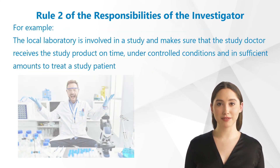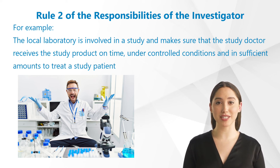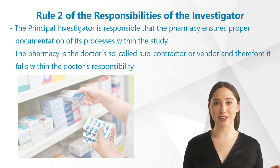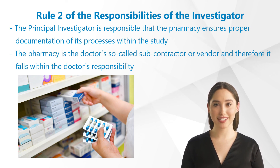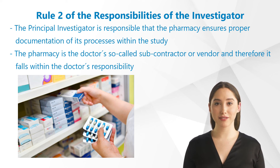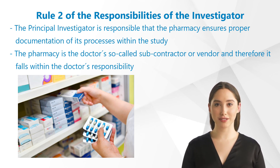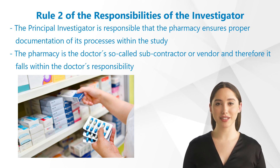For example, if the local pharmacy is involved in a study and ensures that the study doctor receives the study product on time, under controlled conditions and in sufficient amounts to treat a study patient, the principal investigator is responsible for ensuring the pharmacy maintains proper documentation of its processes within the study. The pharmacy is the doctor's so-called subcontractor or vendor, and therefore it falls within the doctor's responsibility and must be monitored, checked, and if necessary, managed by him.